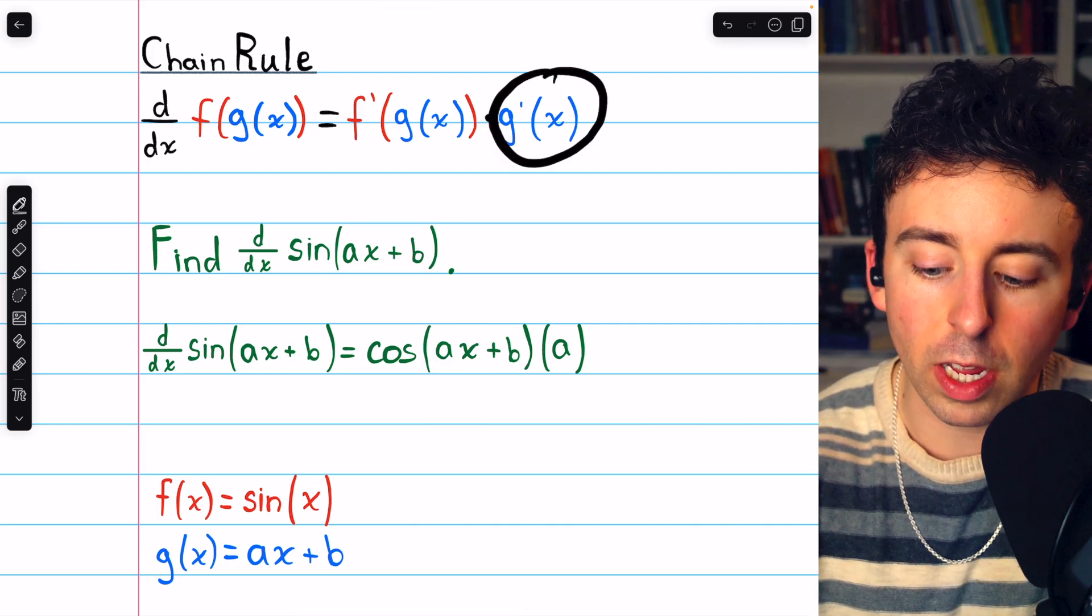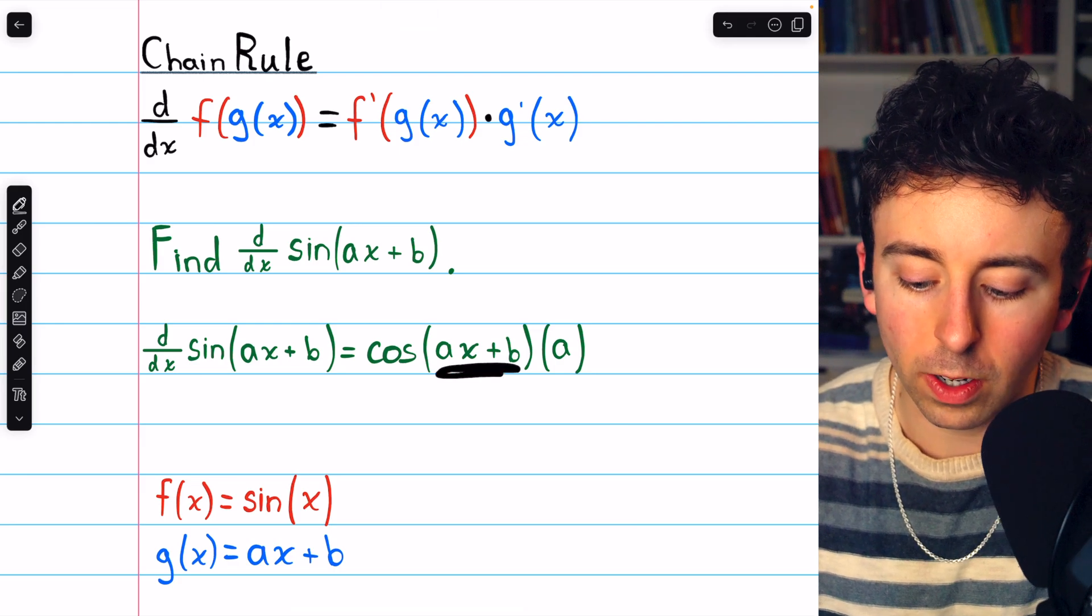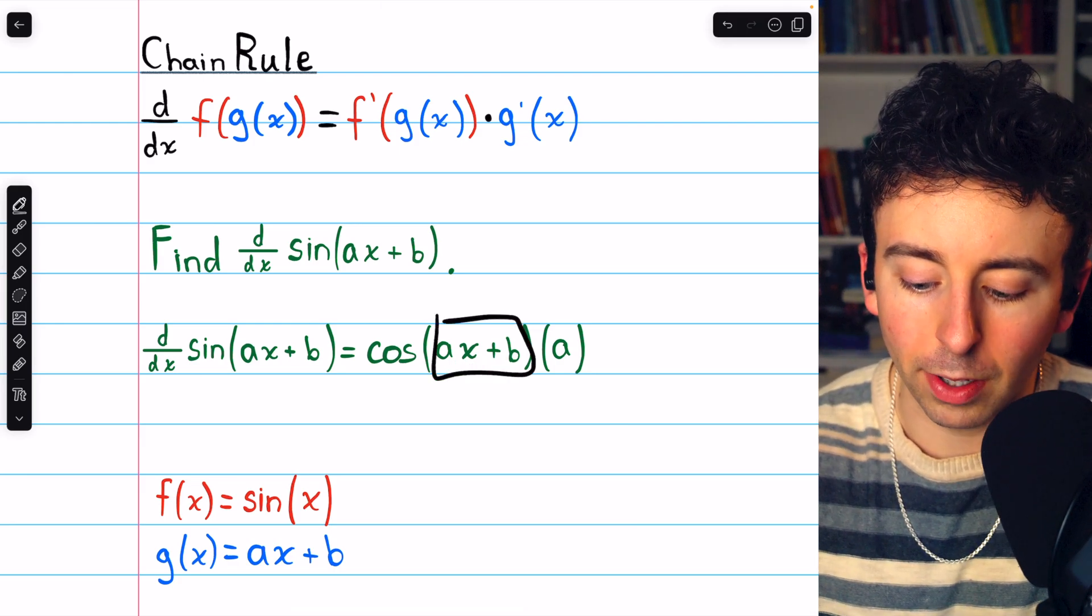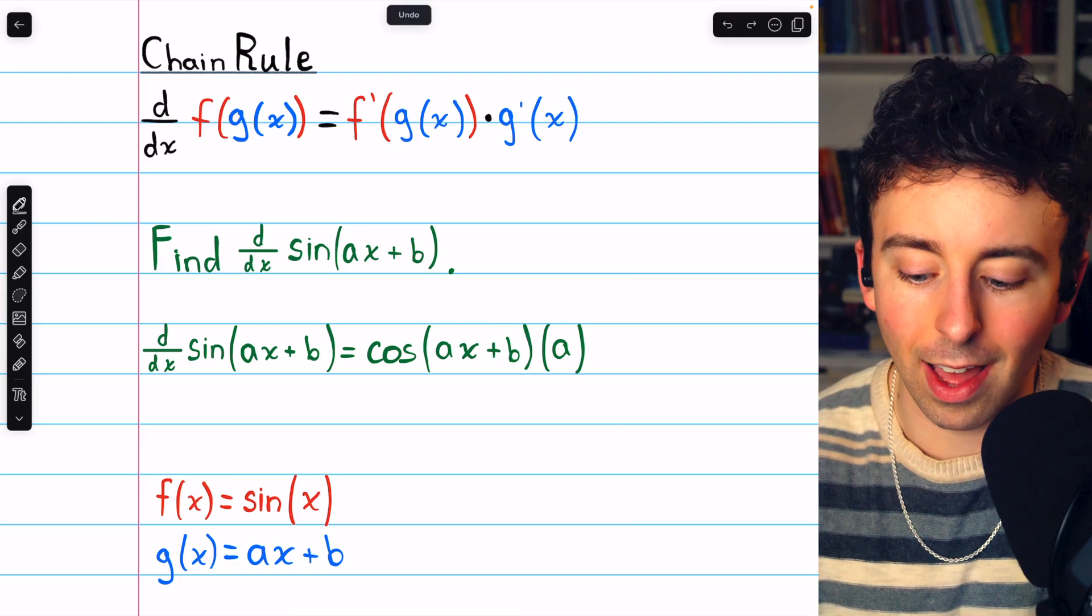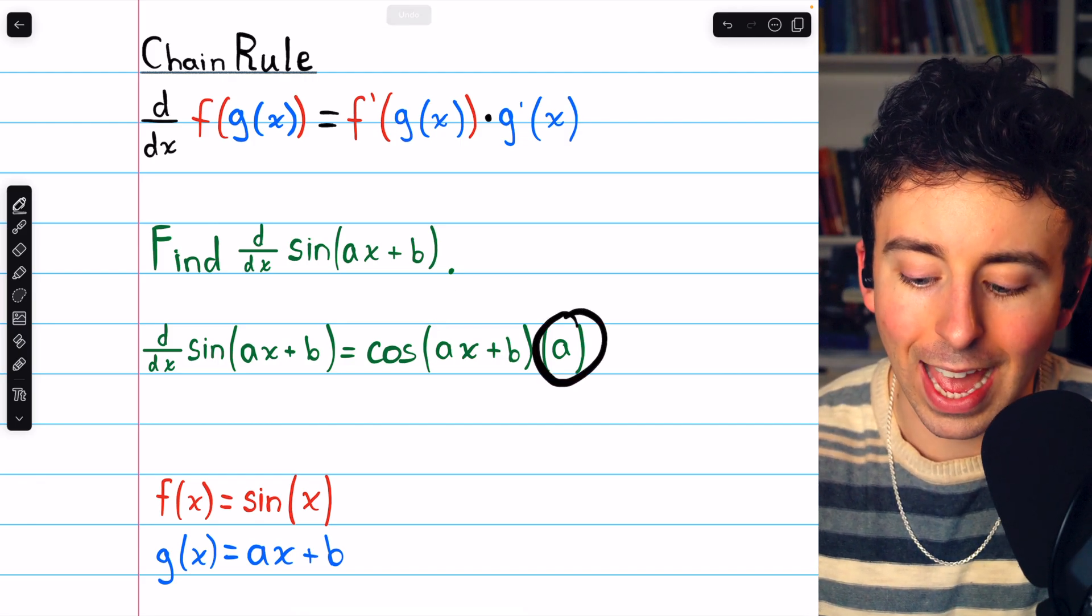We then multiply by g'(x), the derivative of the inside function. The derivative of ax plus b is just the derivative of a line. That's the coefficient of x, which is a.